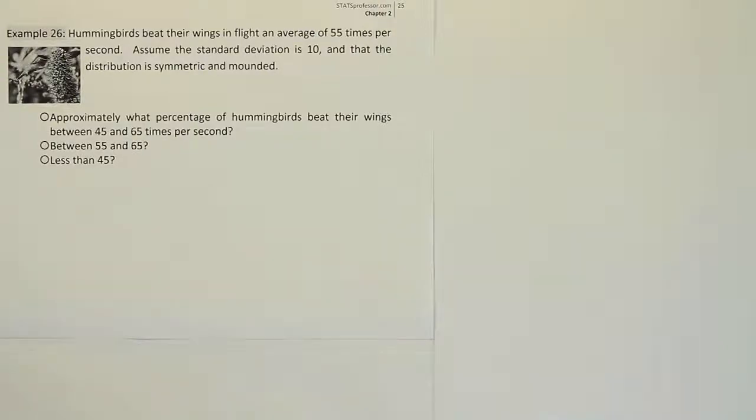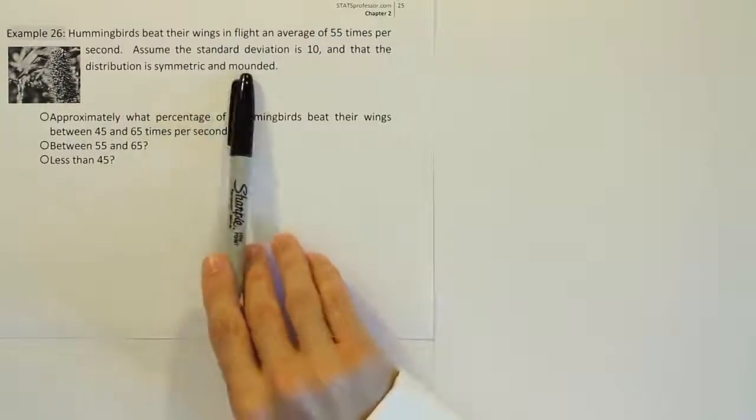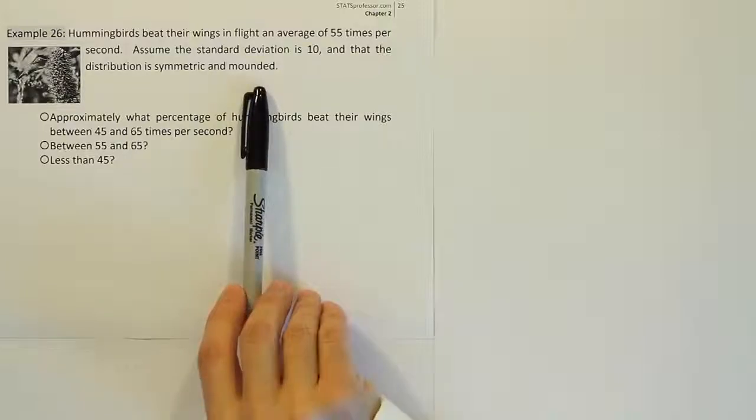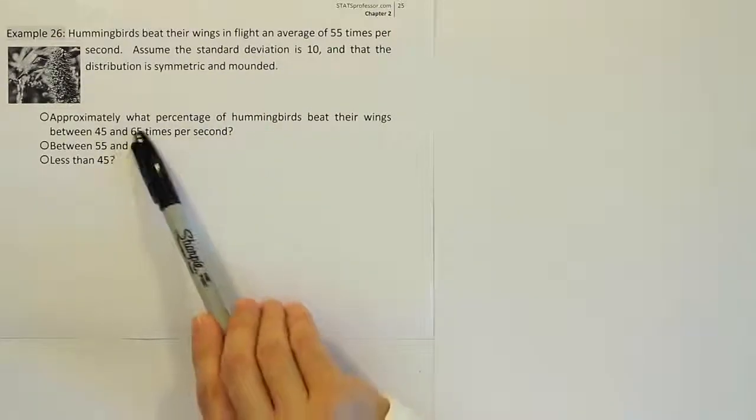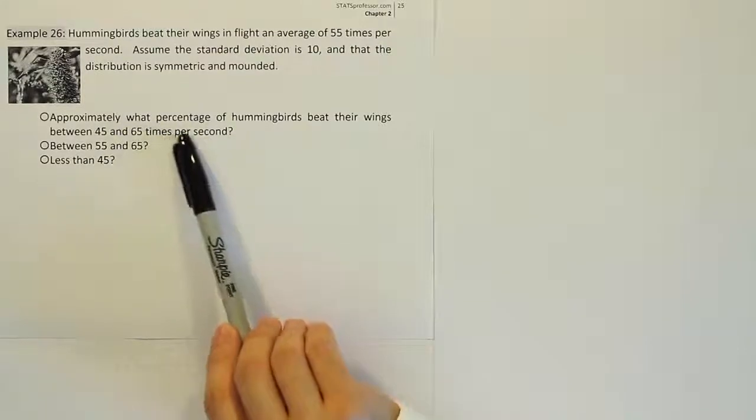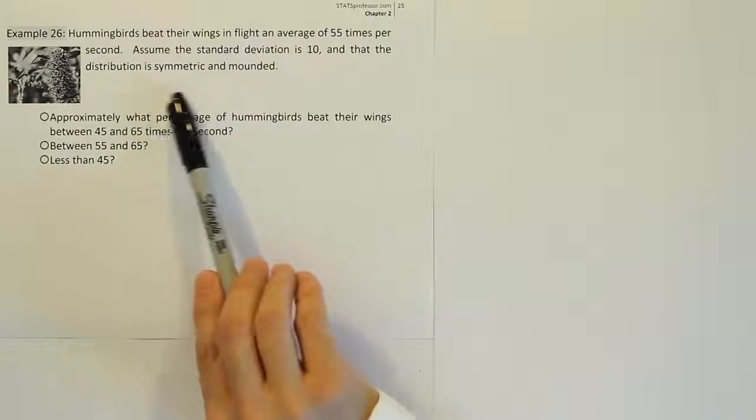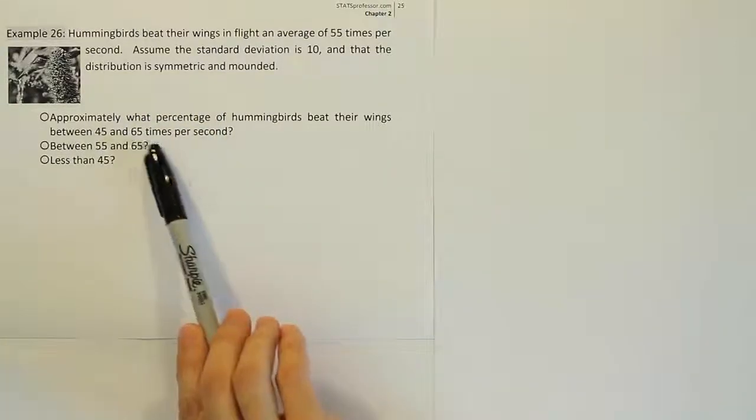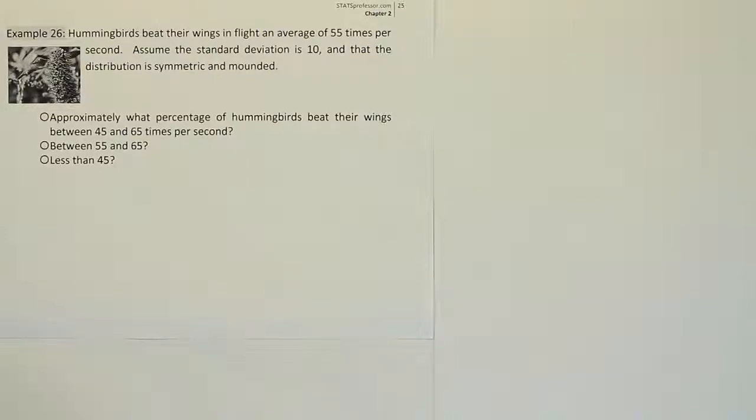When I read this problem, the first thing that jumps out at me is this phrase that says the distribution is symmetric and mounded. That makes me think of the bell curve. Then they're asking approximately what percentage of hummingbirds. That phrase approximately what percentage is the kind of phrase you see in the empirical rule, telling us that it's bell-shaped. Symmetric and mounded also implies empirical rule. And we're looking for the percent inside an interval. At this point I'm pretty certain it's empirical rule, and I will draw the bell curve to start the problem.